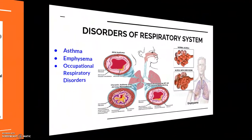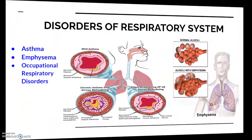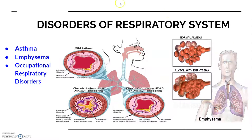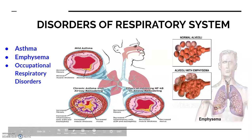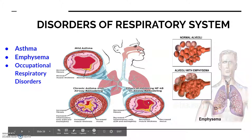Good morning. Today we are starting with the last topic of this chapter, that is disorders of the respiratory system. Three disorders are described in your NCERT book: asthma, emphysema, and occupational respiratory disorders. First, let's talk about asthma and the effects shown in the blood vessels.